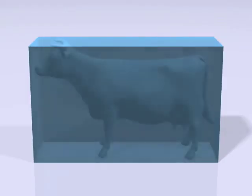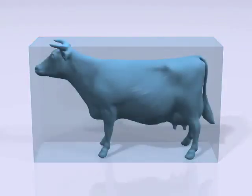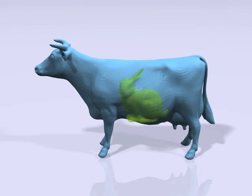Here we carve a cow out of a cube using a cow surface. We can further cut the cow volume with a bunny surface.